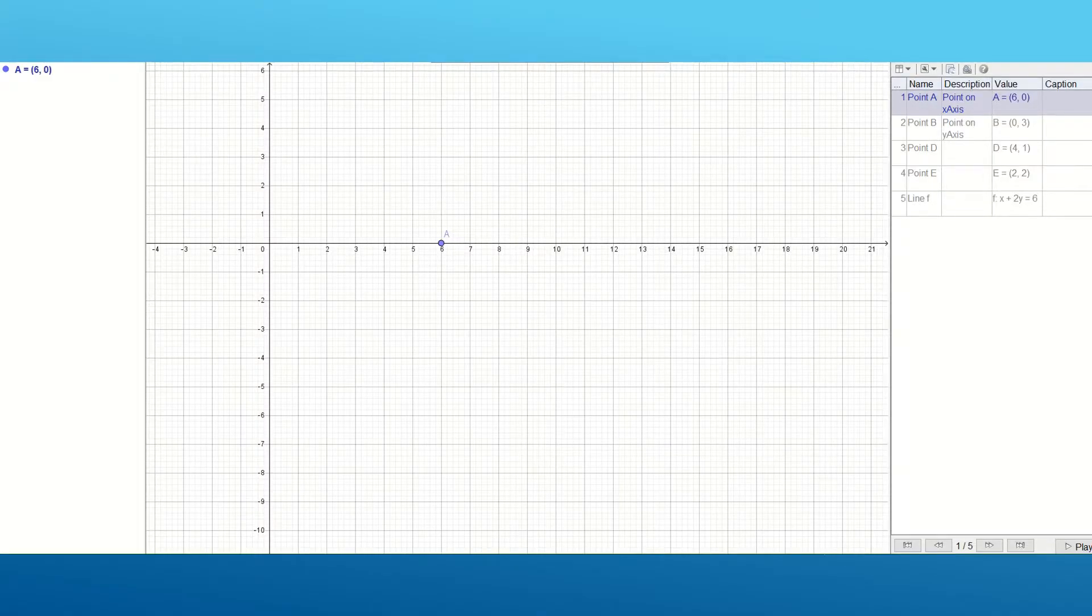Now that we have calculated the values of x and y: when x was 6, y was 0; when x was 0, y was 3; when y was 1, x was 4; when y was 2, x was 2. We have calculated these values, now we're going to plot them.